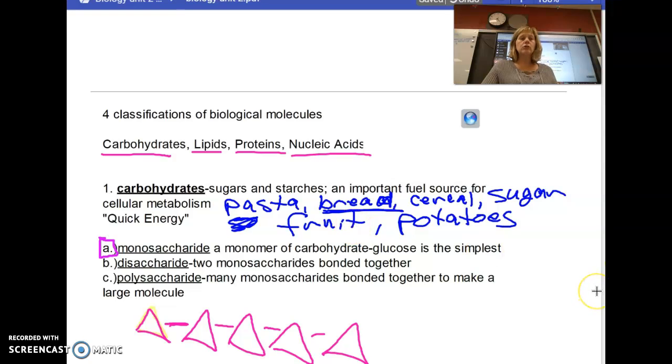A disaccharide, di means two, is just two of those monomers. We talked about how sucrose, which is table sugar, is actually two different monosaccharides. Then polysaccharides are much larger carbohydrates. Things like starches, any kind of starch is going to be a polysaccharide.